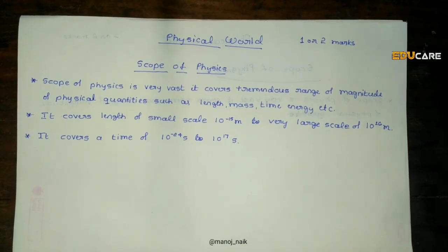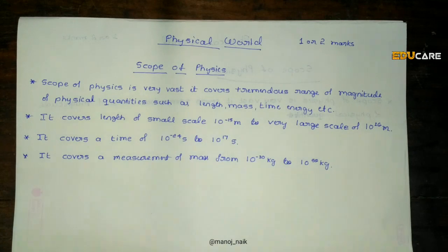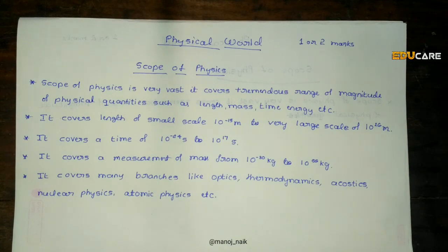The next point: it covers mass from 10 raise to minus 30 kg to 10 raise to 55 kg. This includes the mass of an atom, the mass of a galaxy, mass of planets, mass of different stars. Branches include thermodynamics, acoustics, nuclear physics, and atomic physics.